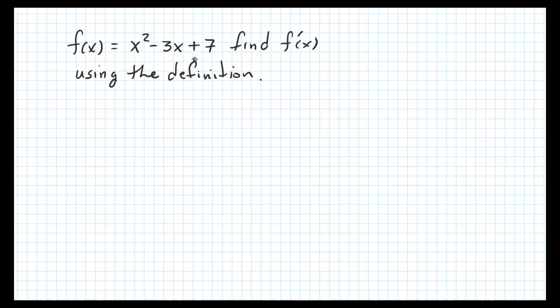We're given the function x squared minus 3x plus 7 — that's a quadratic — and we're asked to find the derivative using the definition. First, let's use the power rule to verify: 2x gives us 2x, the power on the next term is 1 so 1 times negative 3 is minus 3, and the derivative of a constant is 0, so the answer should be 2x minus 3.